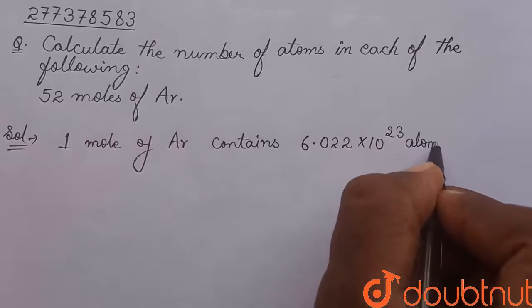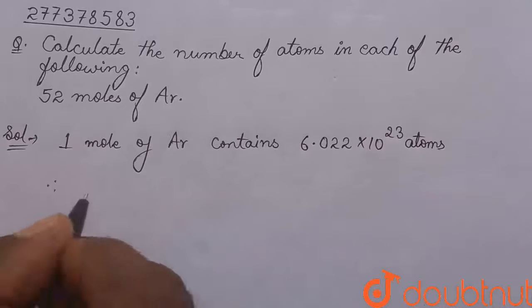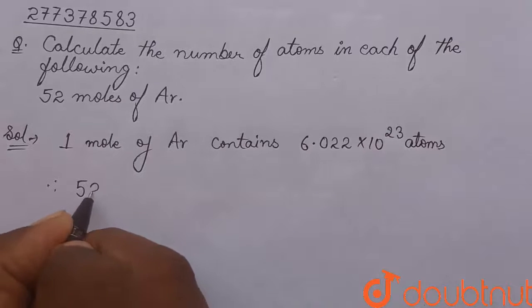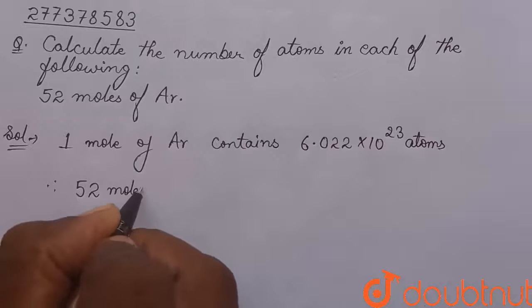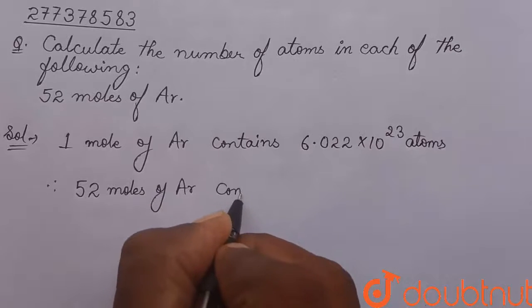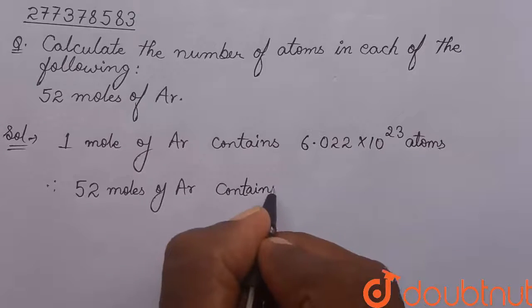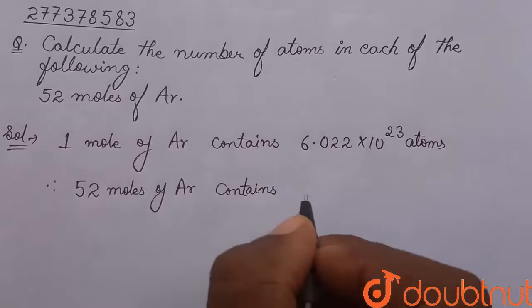So, this number of atoms present in 1 mole of argon. Therefore, 52 moles of argon contains how many atoms of argon? Let's calculate by using unitary method.